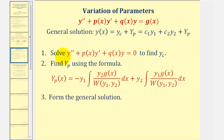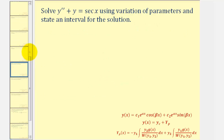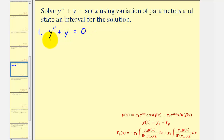Our first step will be to solve the corresponding homogeneous differential equation, which will give us y sub c. Then we'll find big Y sub p using the Variation of Parameters formula, and then form a general solution using y sub c and big Y sub p. So let's look at our example — we want to solve the given differential equation and state an interval for the solution. We do have a linear second order non-homogeneous differential equation, so for step one we will solve the corresponding homogeneous differential equation, which would be y double prime plus y equals zero.